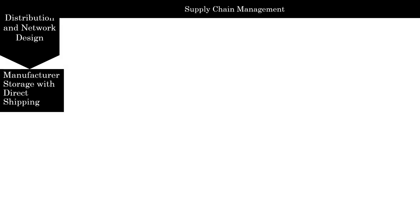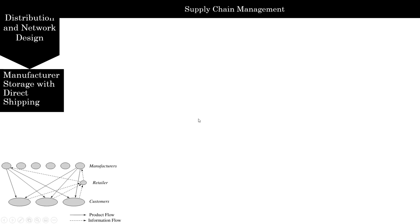In manufacturer storage with direct shipping, the product is shipped directly from the manufacturer to the end customer, bypassing the retailer who takes the order and initiates the delivery request. The information flow goes to the retailer then to the manufacturer, but the shipping is directly from the manufacturer. This is called drop shipping — the retailer carries no inventory and information flows from customer to retailer to manufacturer.